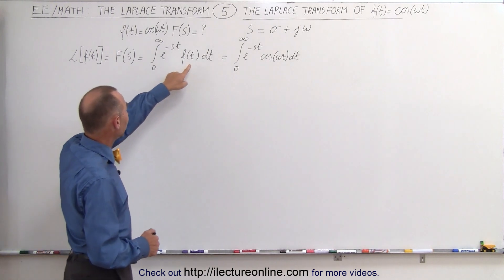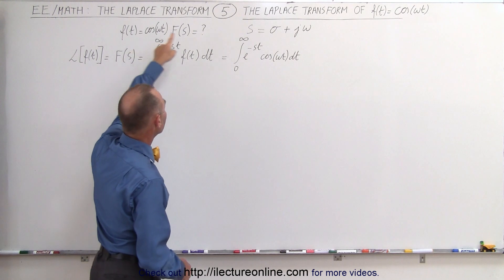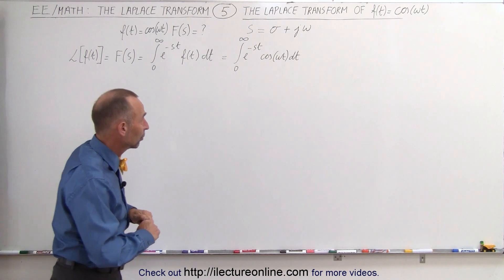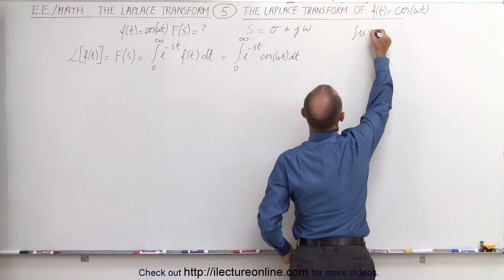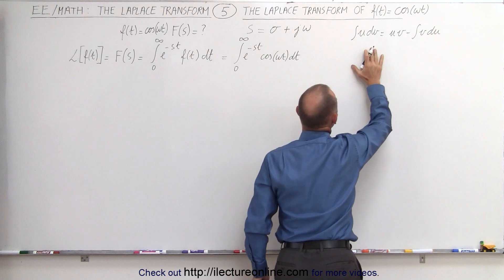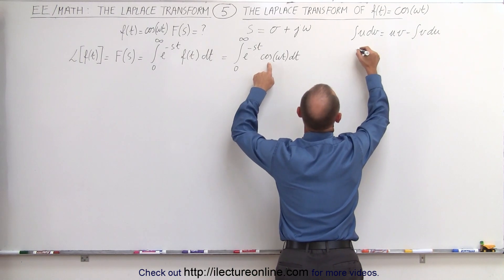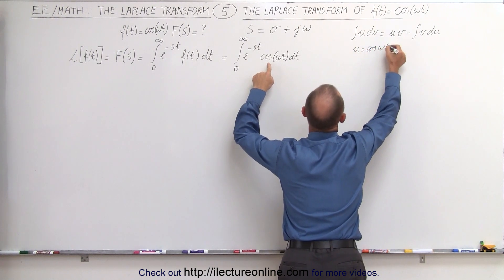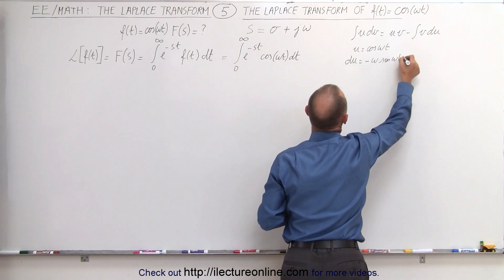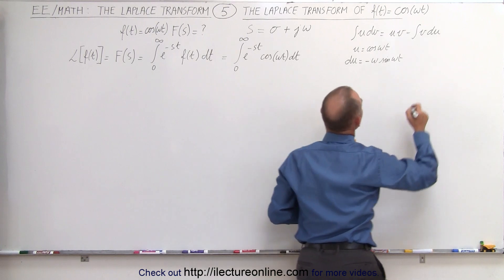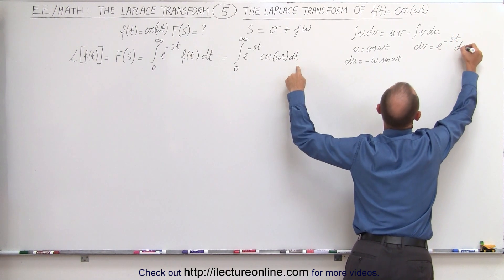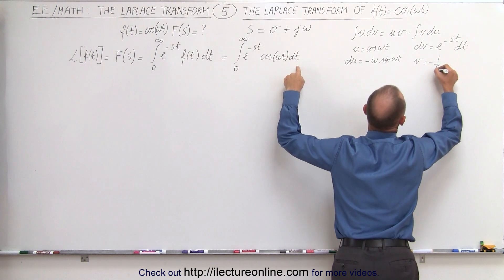Starting here, the first thing we're going to do is replace f(t) by what f(t) is equal to, which is the cosine of ωt, and therefore we end up with this integral. To solve that integral, we use integration by parts: the integral of u dv equals u·v minus the integral of v du. We let u equal cos(ωt), so du equals −ω·sin(ωt). Then dv equals e^(−st) dt, so v equals −(1/s)·e^(−st).